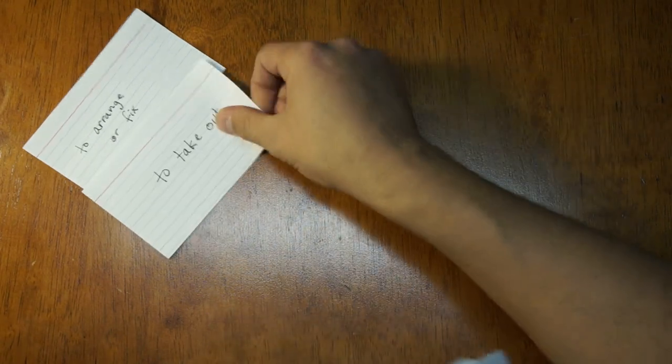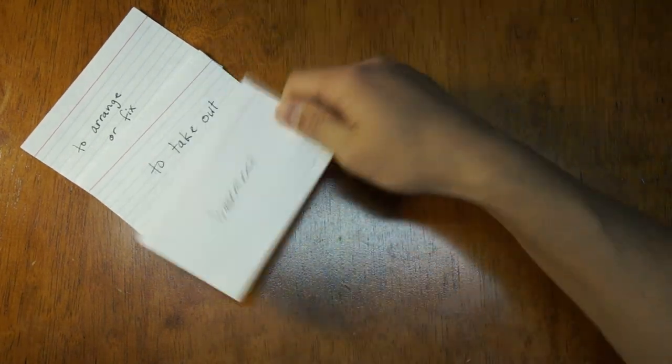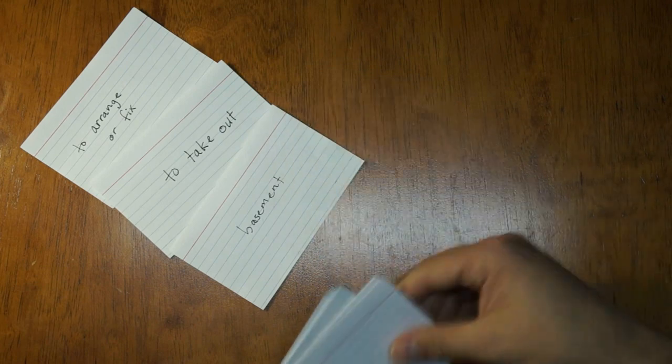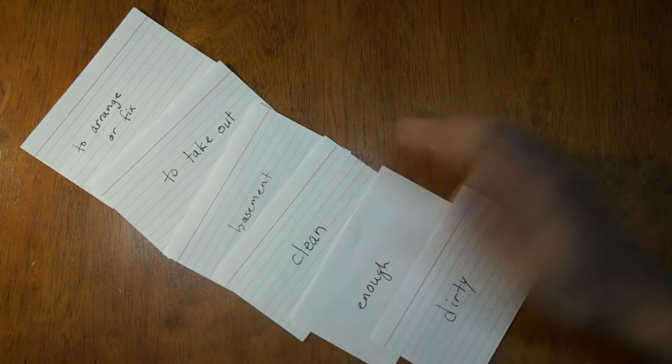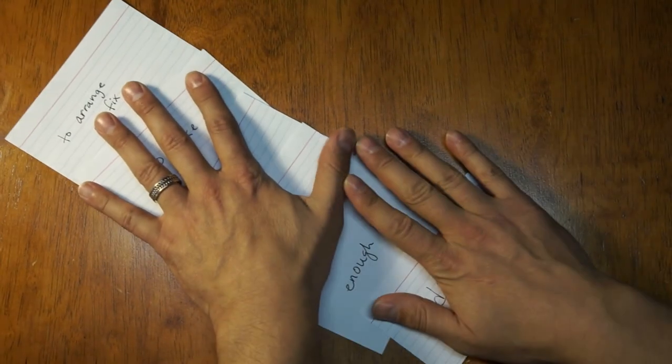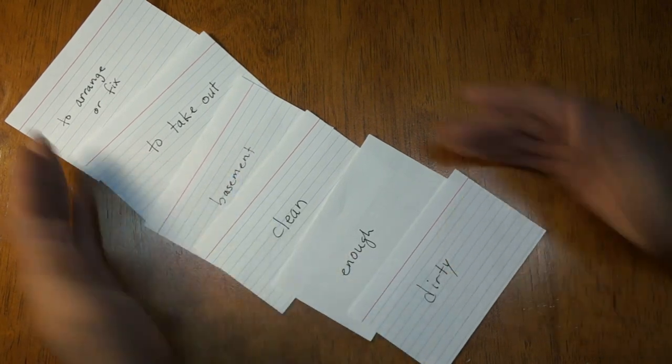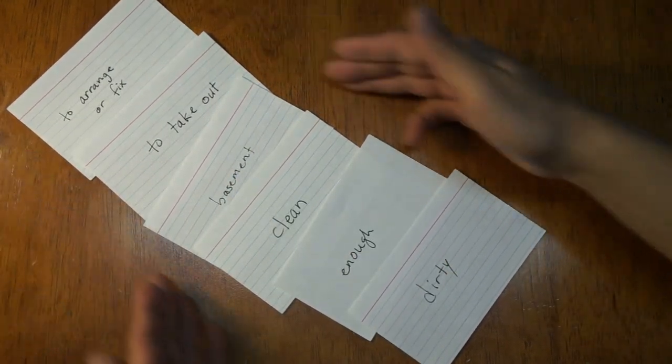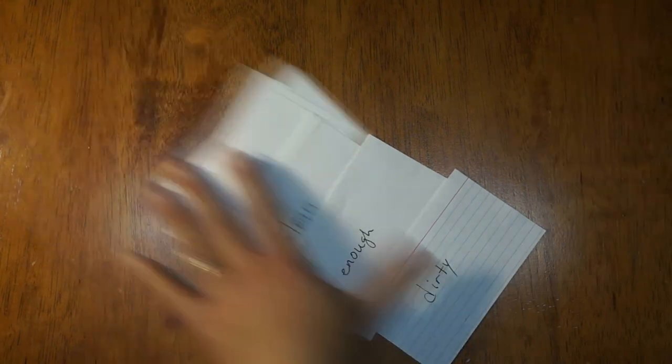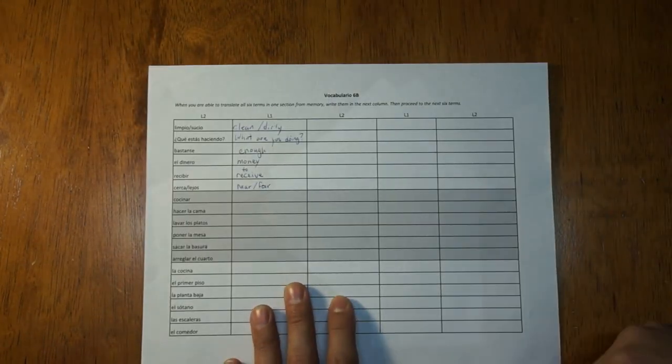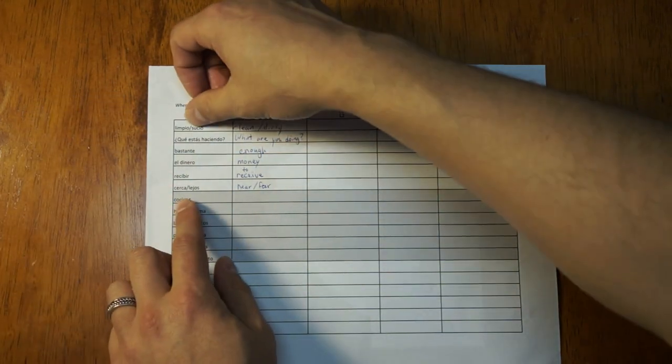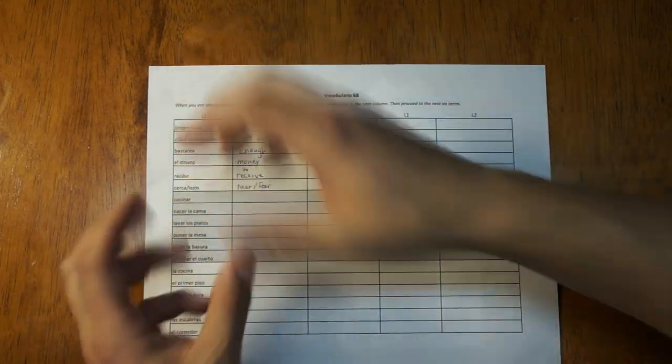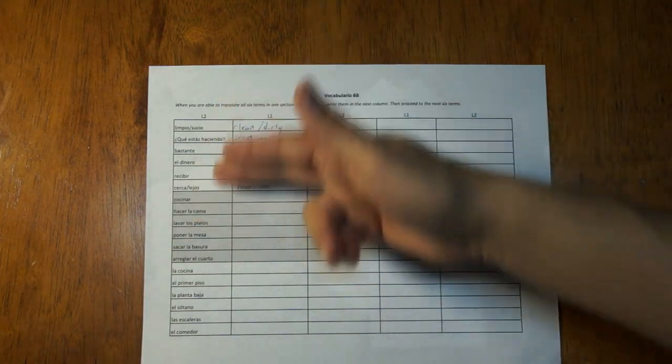So think about this. What if I'm doing this? To arrange or to fix is arreglar. To take out is sacar. Basement is el sótano. If I have to think of these three at the same time, clean and dirty and enough, that's five, that's six. So if I have to think of all of these six words at the same time, you can see that you have to think about each word for longer. Right? So that's the same idea behind this. By doing six words at once, you're guaranteeing that you are holding all the words in your brain for at least, I don't know, 10 or 15 seconds.